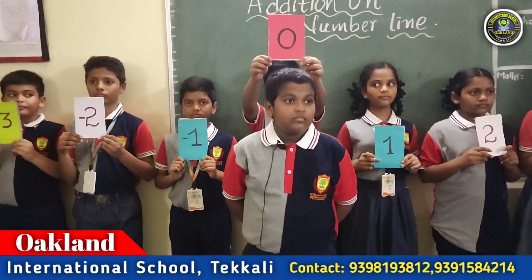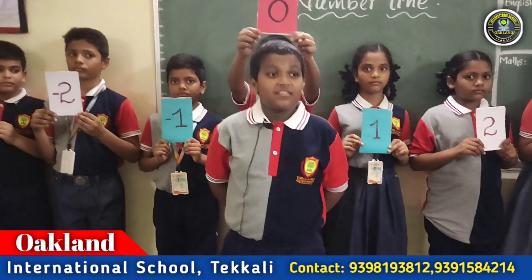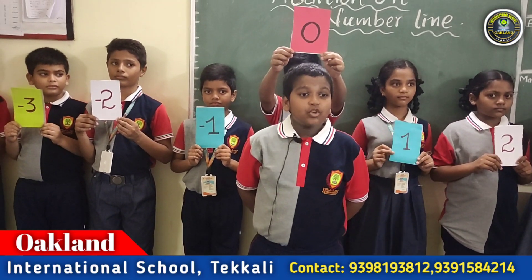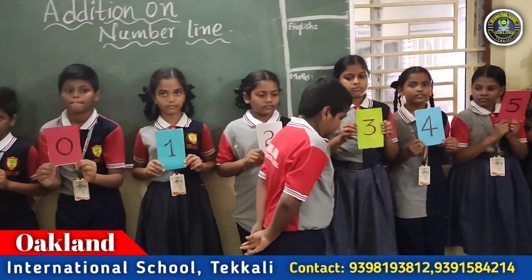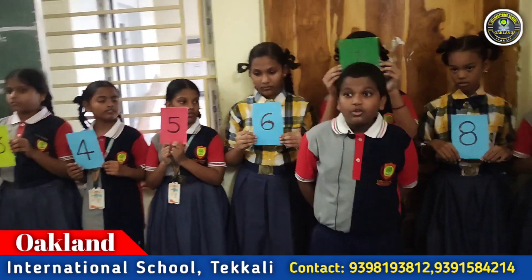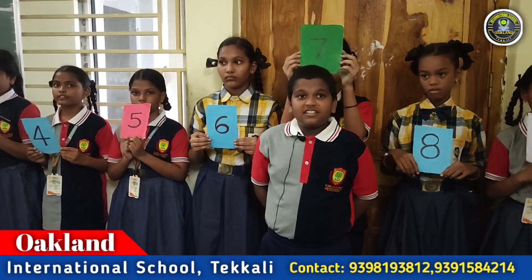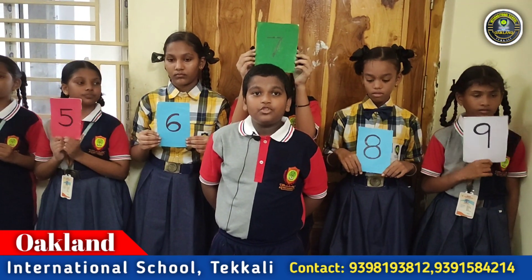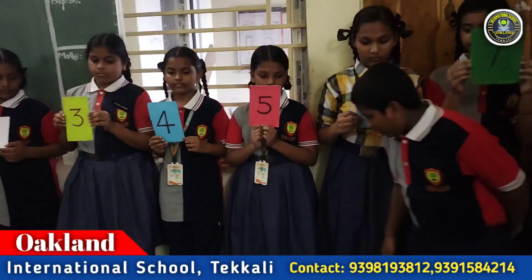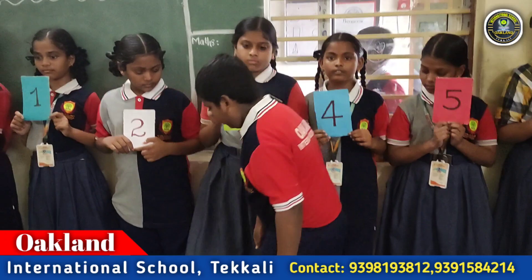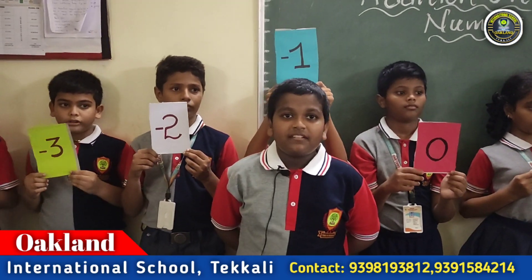Your question is seven plus minus eight. Where I am standing, that is zero position. Seven is a positive integer, so we should move seven steps right side on the number line. One, two, three, four, five, six, seven. I reached seven. We should add minus eight. Minus eight is a negative integer, so we should move eight steps left side on the number line. One, two, three, four, five, six, seven, eight. So the answer is minus one. It's the correct answer.